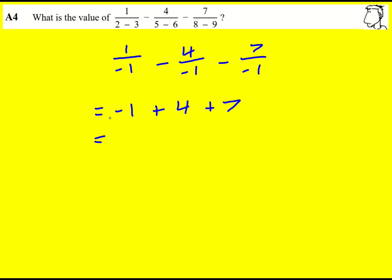4 plus 7 is 11. You can add these first and then minus the 1, so the answer is going to be 10.